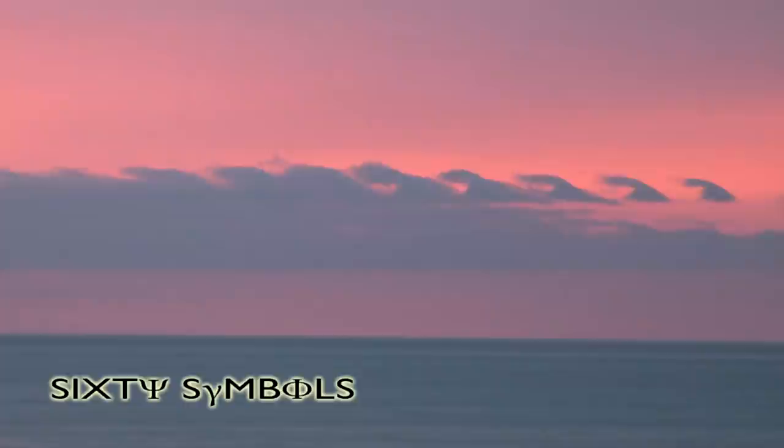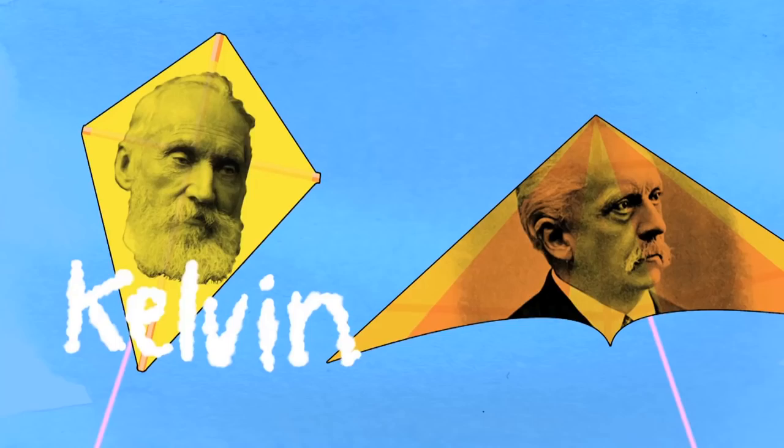Their technical name amongst cloud people is fluctus clouds, but amongst physicists they're called Kelvin-Helmholtz clouds. They're named after the Kelvin-Helmholtz instability discovered by Lord Kelvin and Hermann von Helmholtz in the mid-19th century.